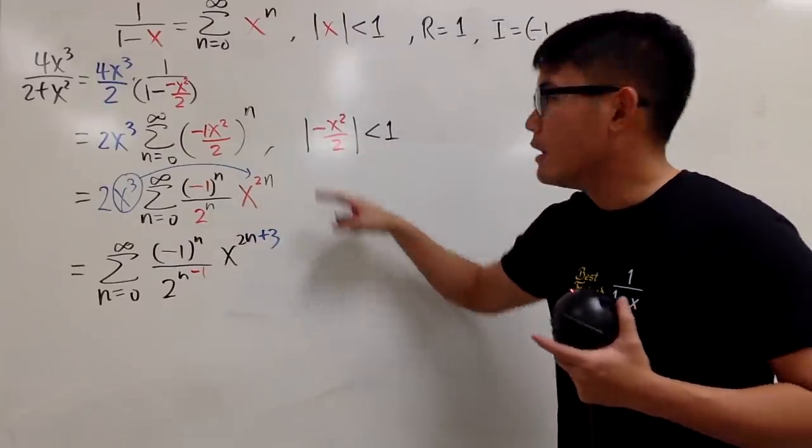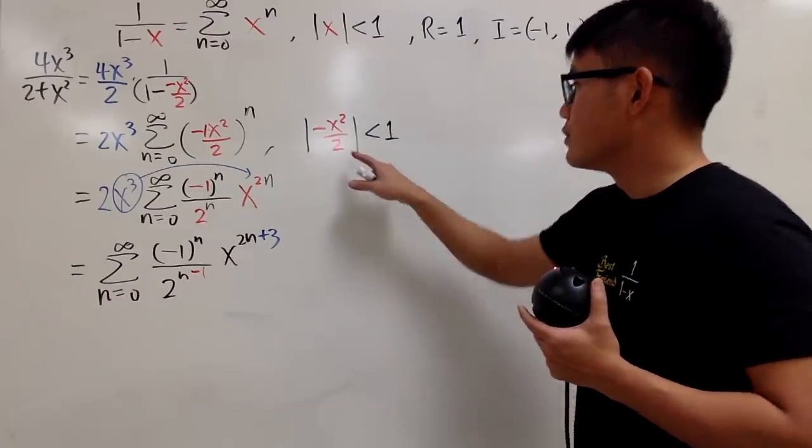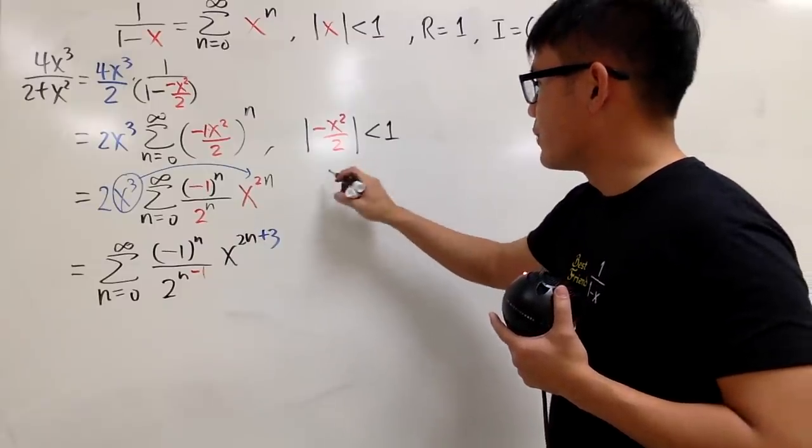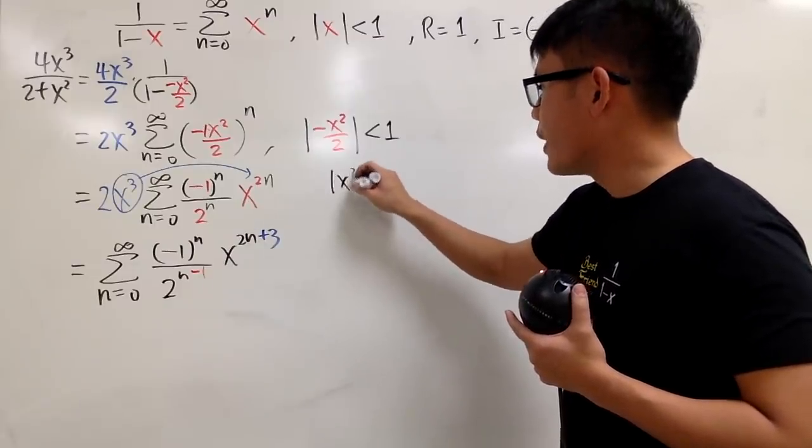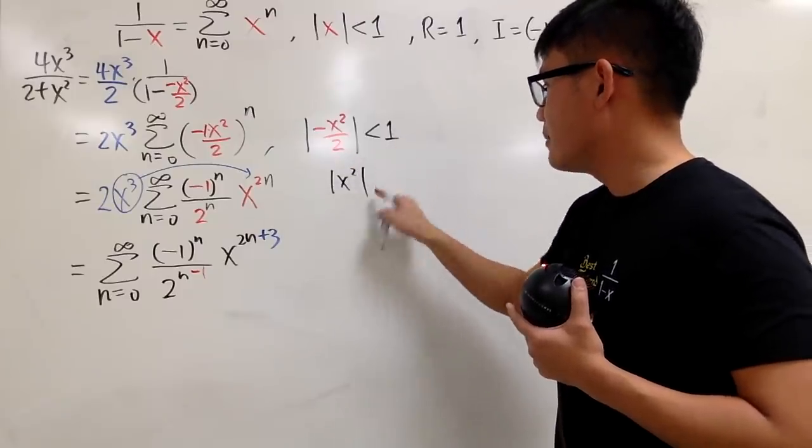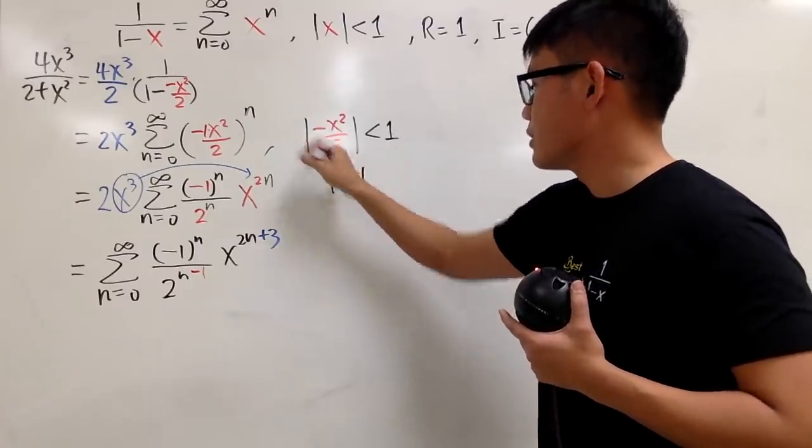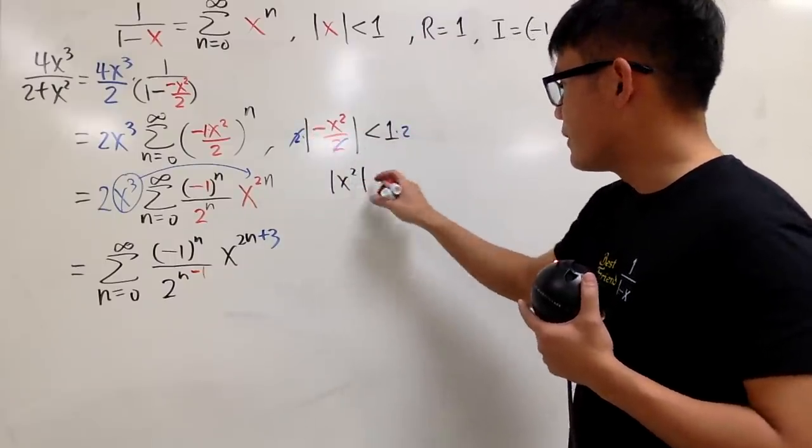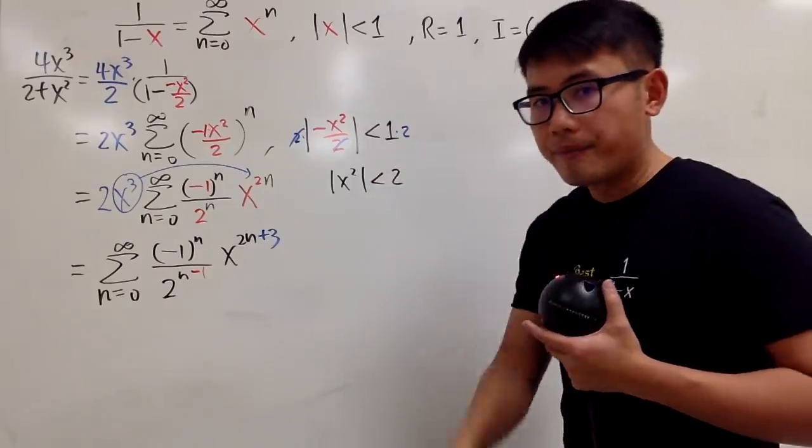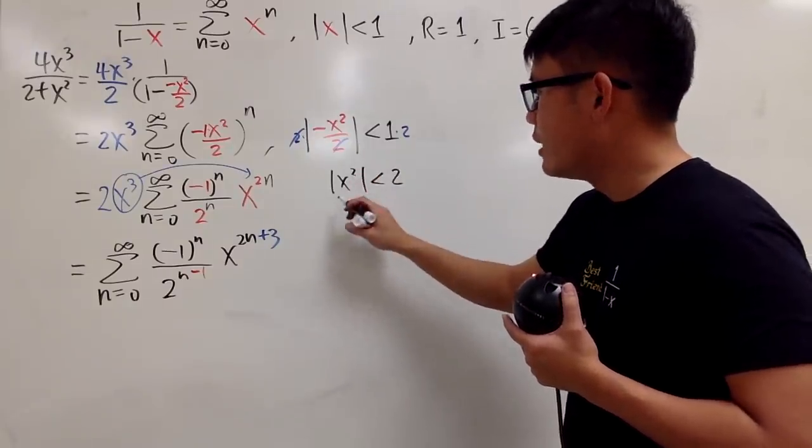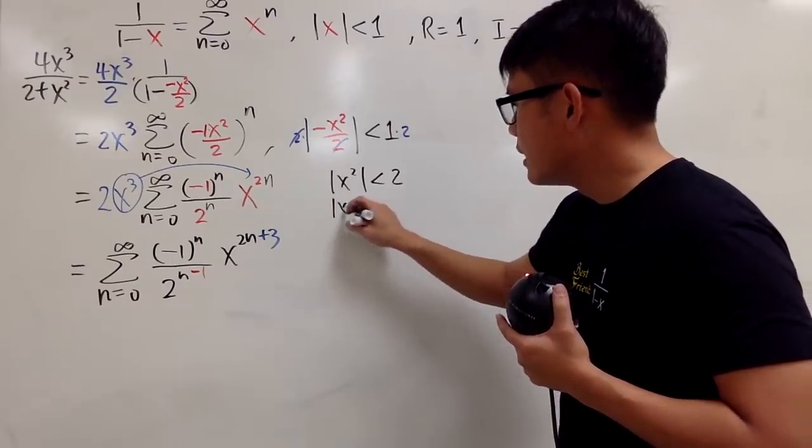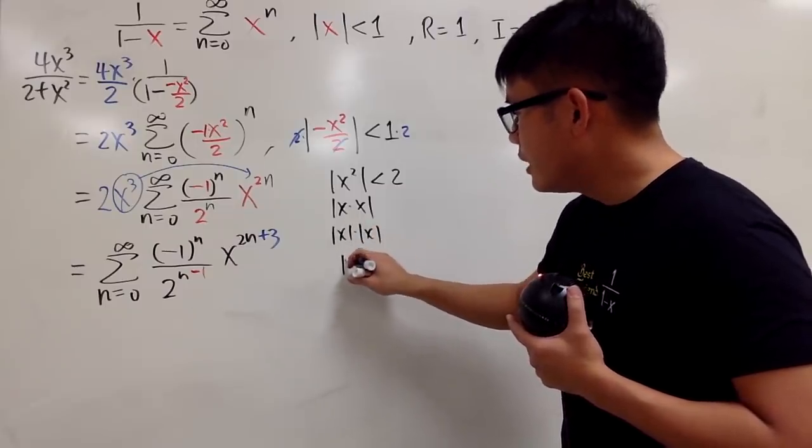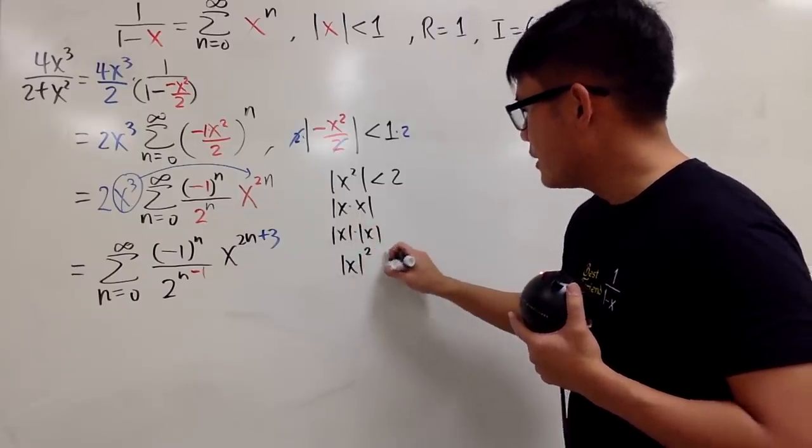Now, let's focus on this. Absolute value of negative, the negative is gone. So right here, I can just multiply both sides by 2. And technically, I will do this for you guys. We have the absolute value of x squared, and we multiply by 2 on both sides. So this 2 and that 2 cancel. So the absolute value of x squared is less than 2. Now, absolute value of x squared, it's the same as saying absolute value of x times x. And this right here, it's actually the same as absolute value of x times absolute value of x, which is going to tell you absolute value of x squared less than 2, like that.